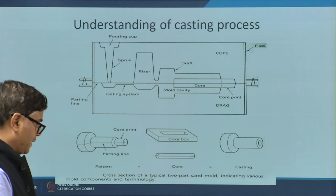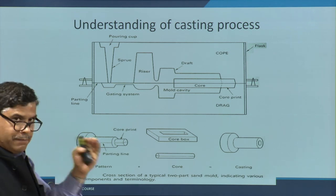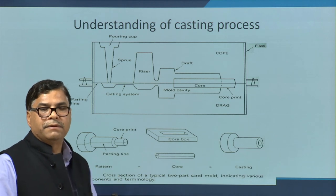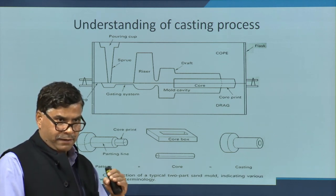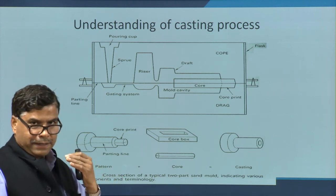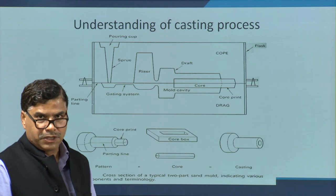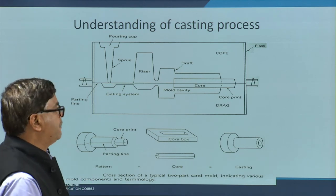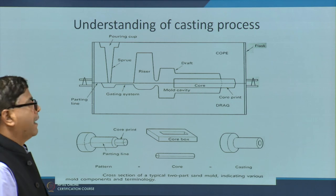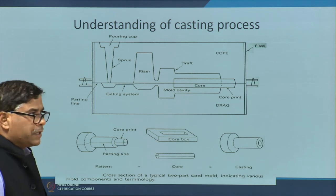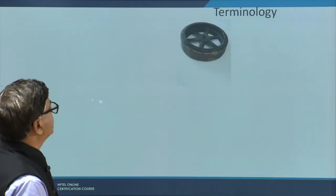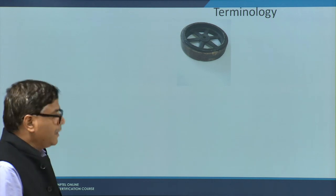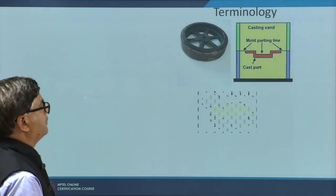The entire system — from the pouring basin to the sprue base, runner, mould cavity, and riser — forms the gating system, which is to be designed properly so that molten metal can be fed into the casting in the minimum possible time, suitable directional solidification is achieved, and the casting is free from defects related to shrinkage and other issues.